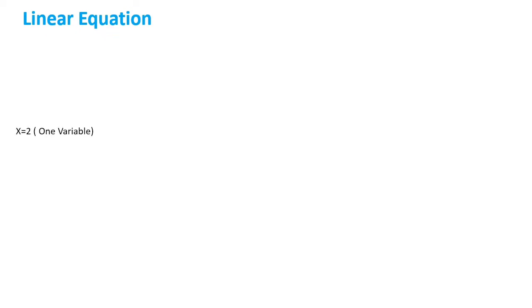Before discussing linear inequalities, let's recall the concept of linear equation. Consider an example: x is equal to 2. Here, since there is an equal to symbol, that is called an equation. There is only one variable, that is x, so x = 2 is a one-variable equation. Next, consider 2x + 3y = 12. Here x and y are two alphabets, that is why it is called a two-variable equation, and it contains an equal to symbol.